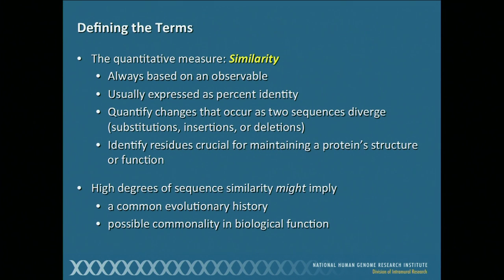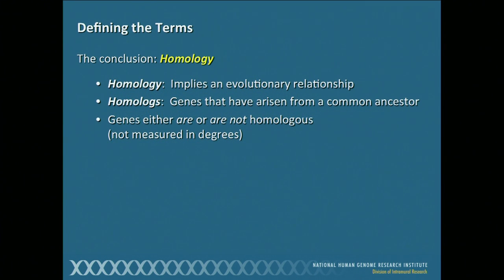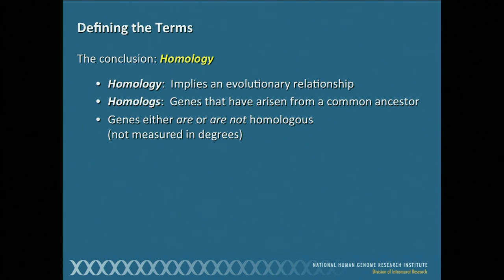The second term we need to define is one that is more often than not misused, and that term is homology. Homology implies an evolutionary relationship. When we have two proteins that are called homologs, that means their genes have arisen from a common ancestor. Homologs — two genes or two proteins — either are or are not homologous. This is not measured in degrees; this is the conclusion that one draws based on a similarity metric.